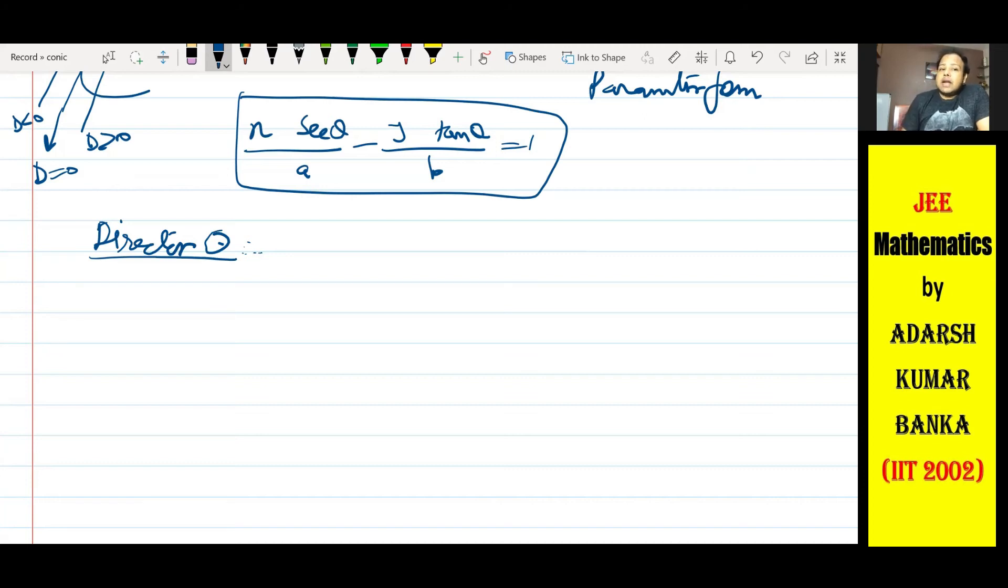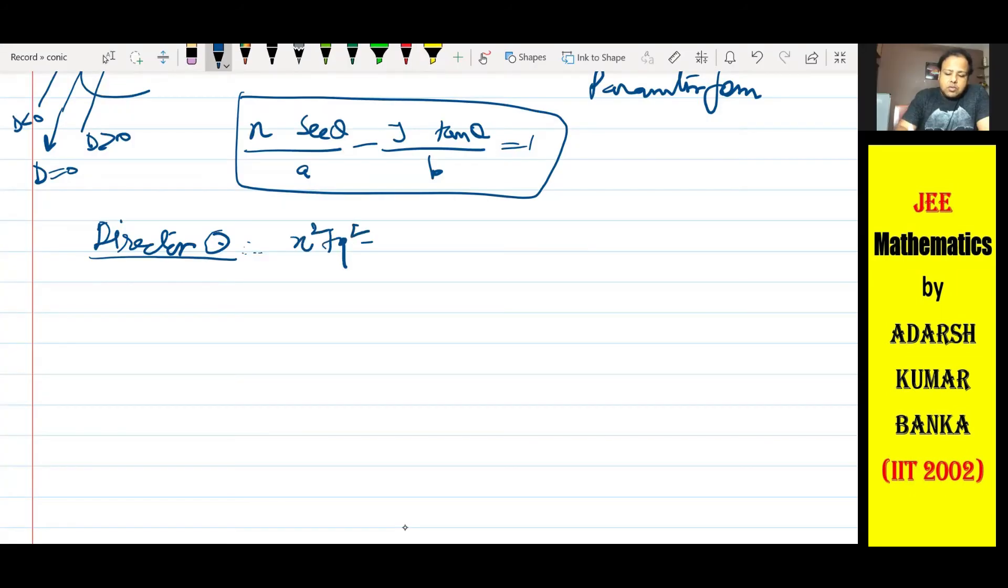Unka chord of contact kya tha if you remember? Was a focal chord. Ellipse mein director circle kya tha? x square plus y square equals a square plus b square tha. Yahaan kya hoga? a square minus b square. So this would be the director circle of the standard hyperbola x square by a square minus y square by b square equals 1.